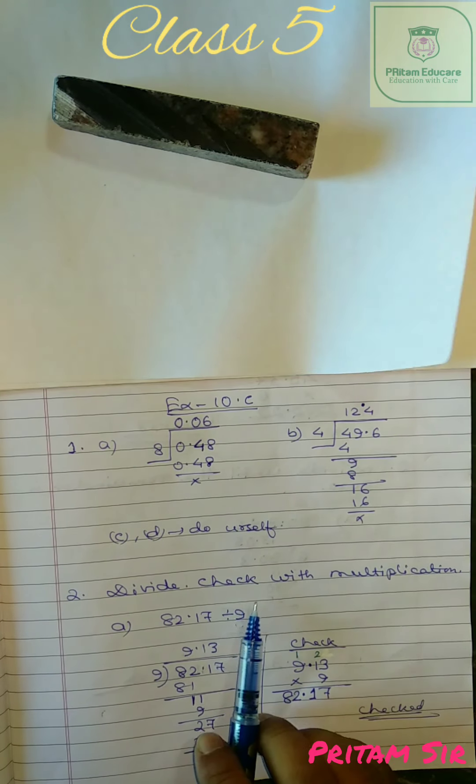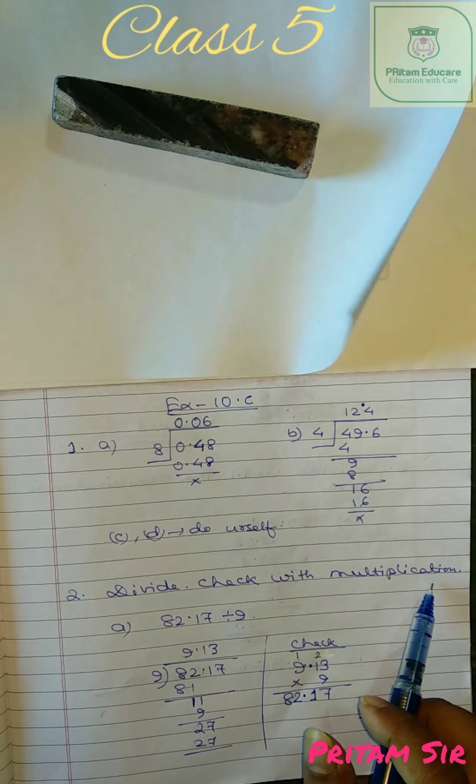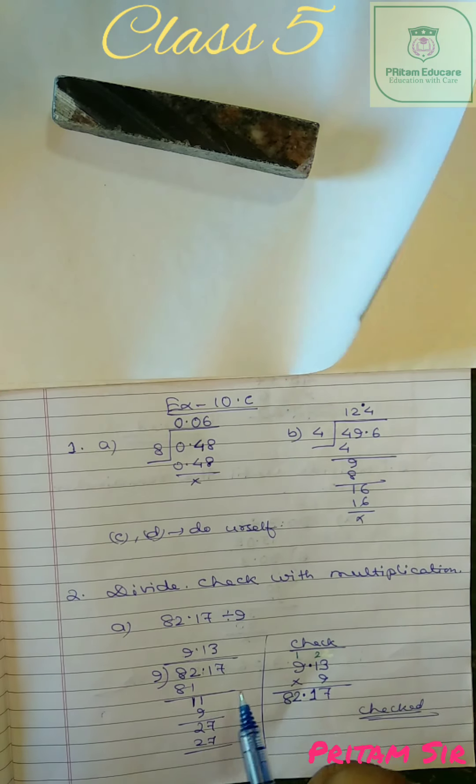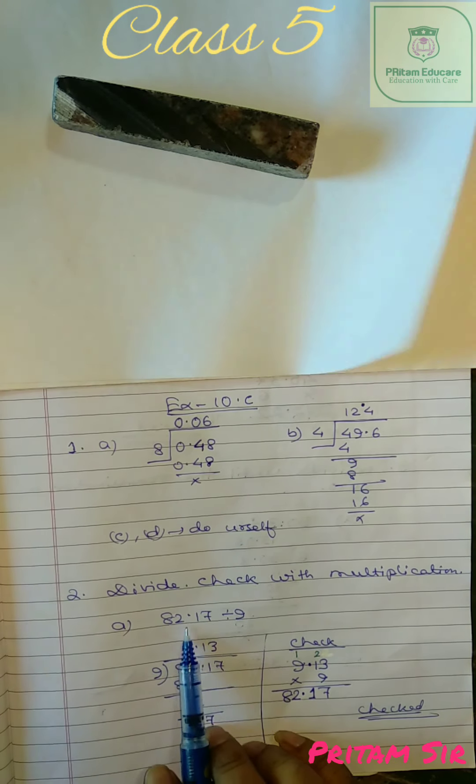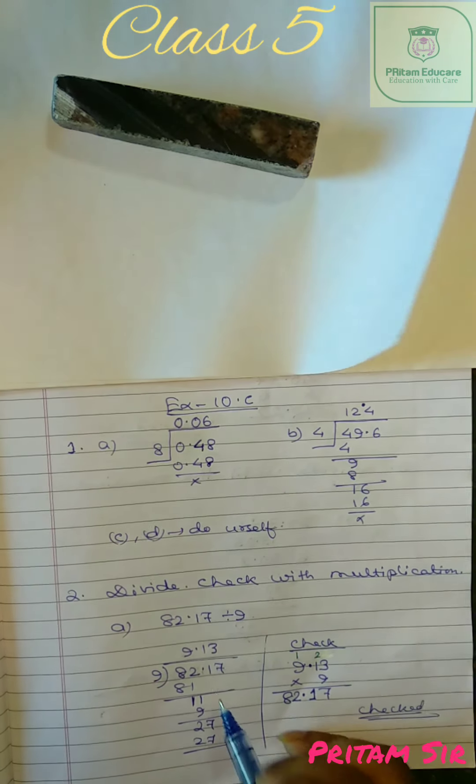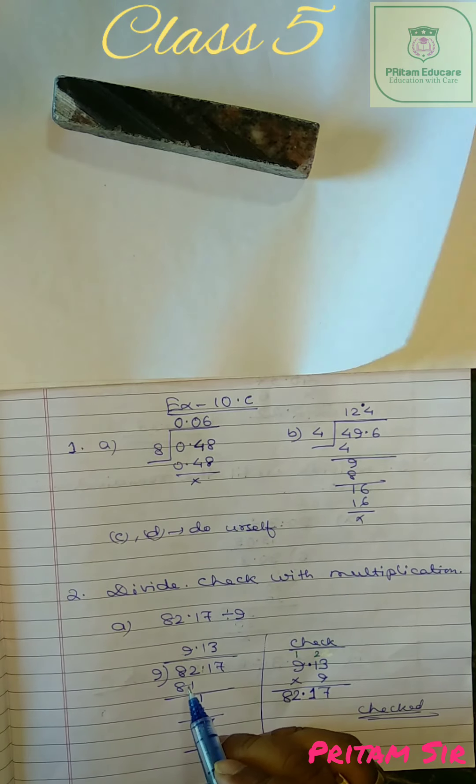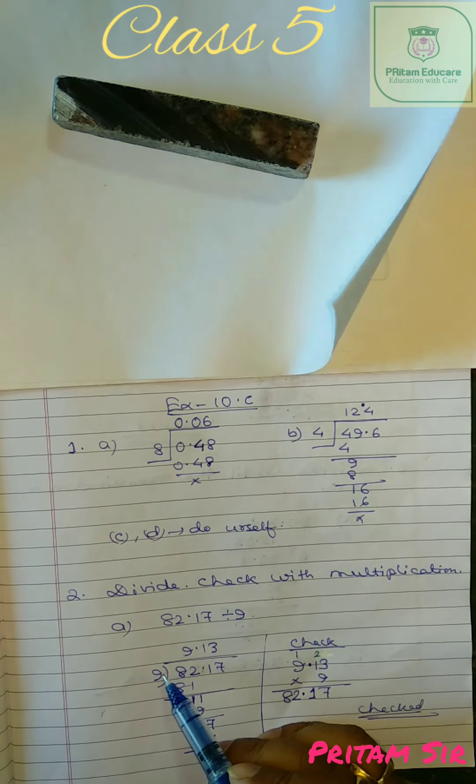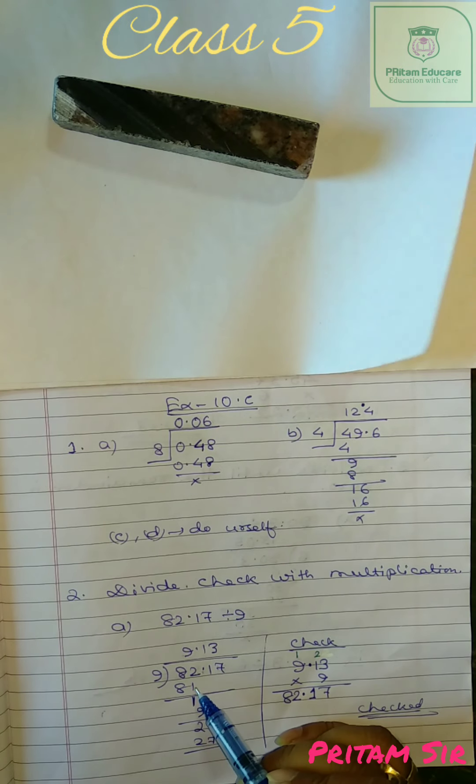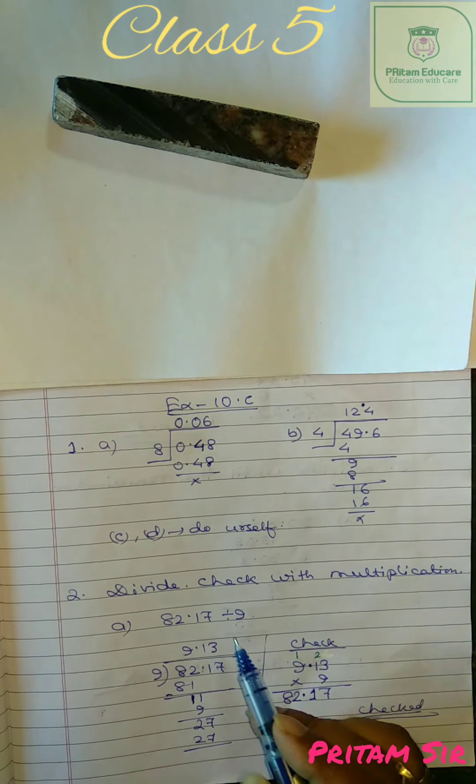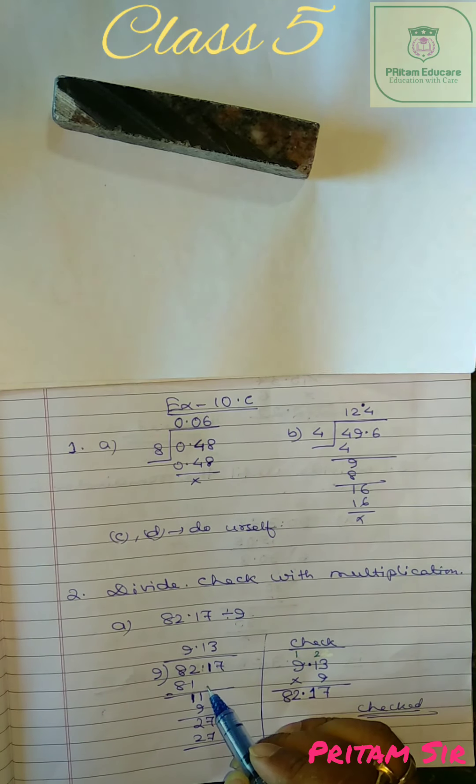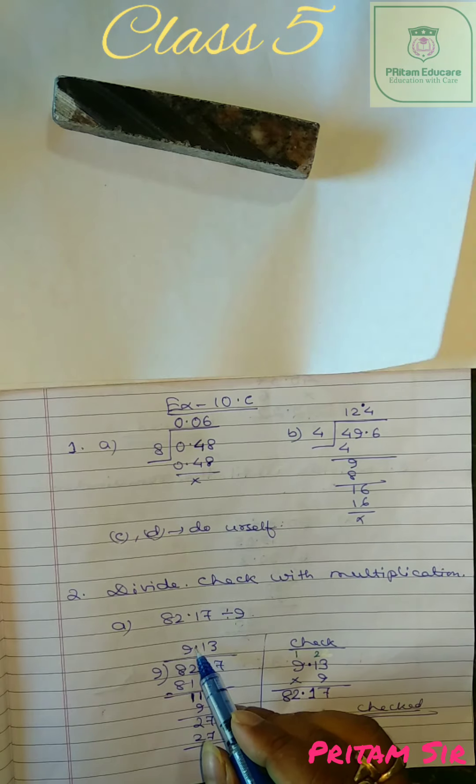Now divide and check with multiplication. Question number two is first you have to divide and then you have to check by multiplication that your answer is correct. 82.17 divided by 9. So 9 into 82.17. Now see 9 into 9 is 81. 2 minus 1 is 1. 1 comes down.